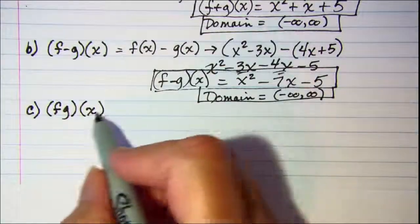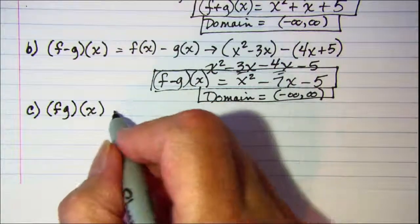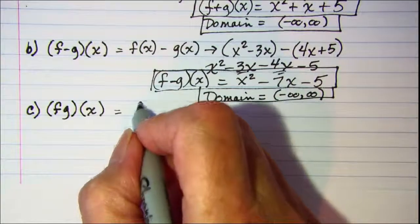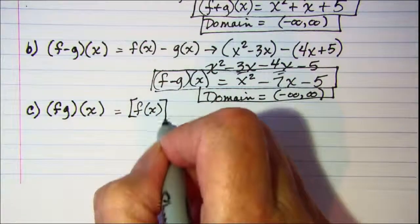Next, we'll find the product f times g of x and that will be f of x multiplied by g of x.